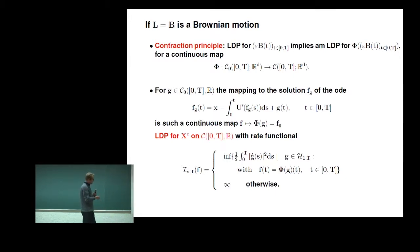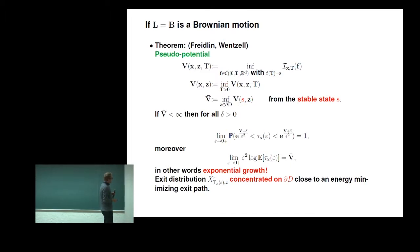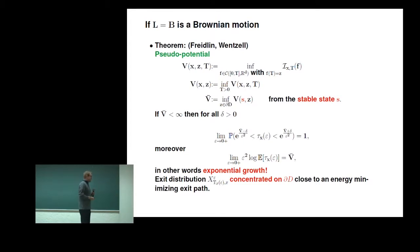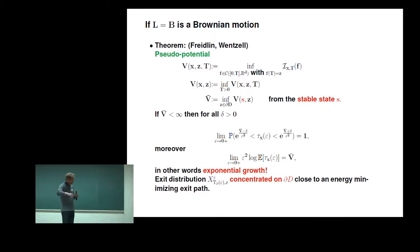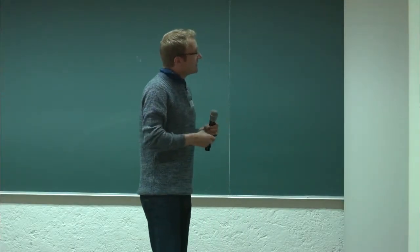This is rather classical, and what you get out is an asymptotics of the first exit time which is exponential. You introduce some pseudopotential given as some energy, and whenever this energy is finite, the height of the highest saddle point in the energy landscape gives you the exponential exponent. What you get out is an exponential growth of the expected first exit time, and the exit distribution is concentrated more and more narrowly on the boundary at the point where the energy-minimizing trajectory just hits that boundary.